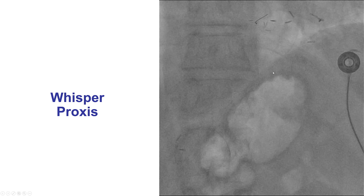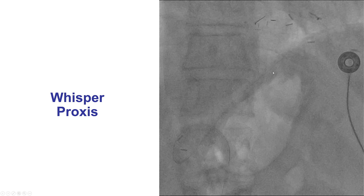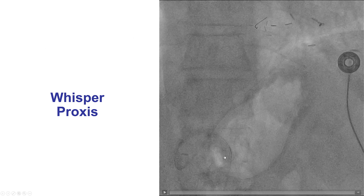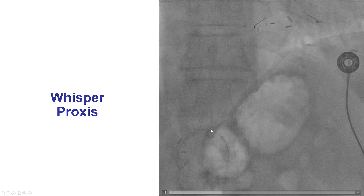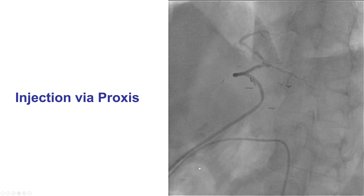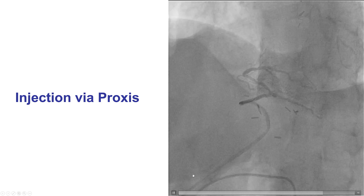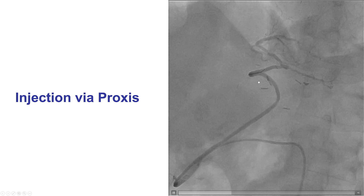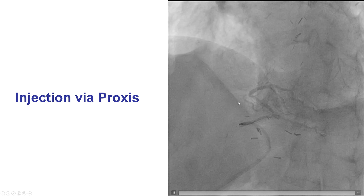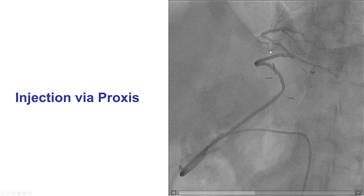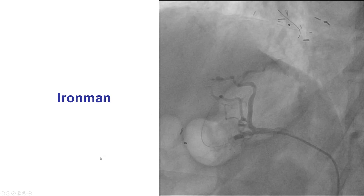The question is how can we get better visualization of this. This was many years ago — we didn't have guide extensions, but we did have a catheter called Proxis, which is similar to a guide extension. We were able to advance it into this branch and then do a selective injection that now demonstrates nicely the gastroepiploic graft going to the PDA and then giving flow to the rest of the right coronary artery. It also appears there is a significant lesion proximal to the touchdown of the gastroepiploic graft, which was considered to be the culprit.